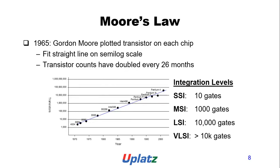Moore's Law, from 1965: the number of transistors on a chip follows a straight line on a semi-log scale, with transistor count doubling approximately every 26 months. Integration levels are classified as SSI (10 gates), MSI (1000 gates), LSI (10,000 gates), and VLSI (greater than 10,000 gates).